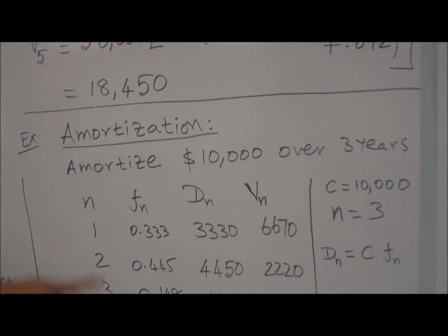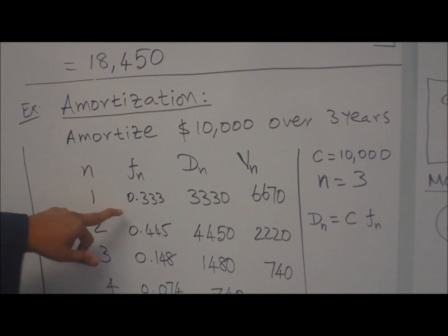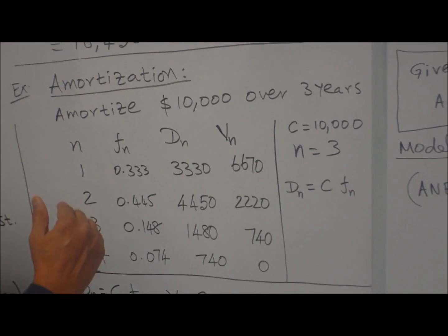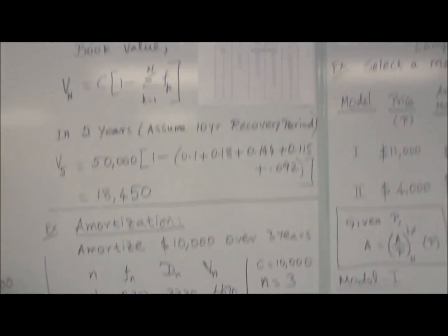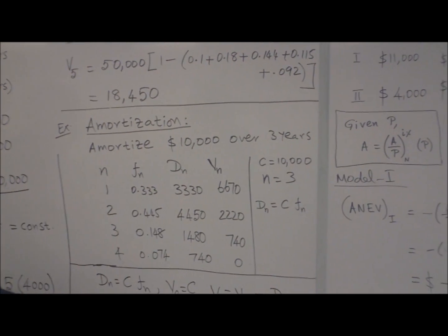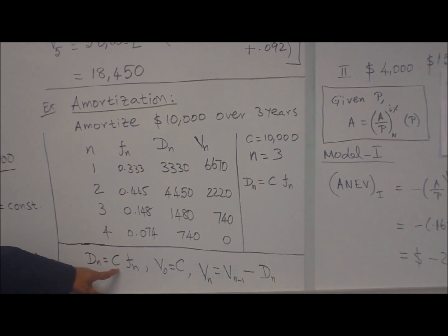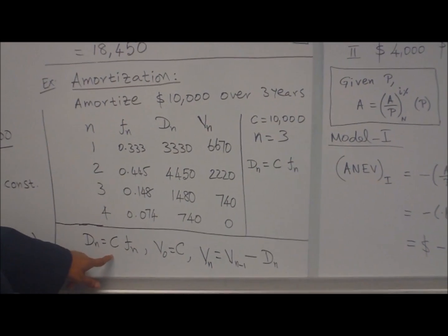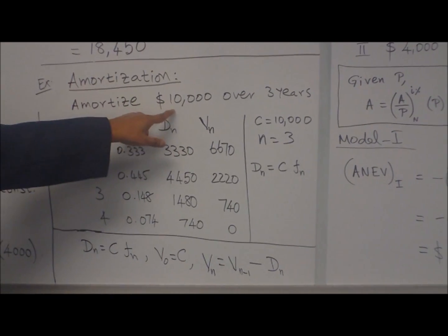Here for example, 1, 2, 3, 4, F_n for 3 years recovery period. Use these numbers from the column. Then the column D_n can be computed from D_n equal to C times F_n. If C equals $10,000, so 10,000 times each value gives D_n.